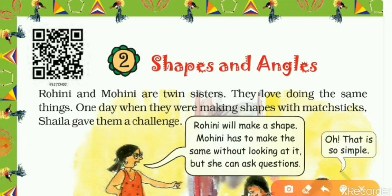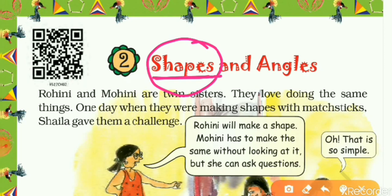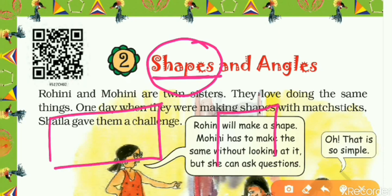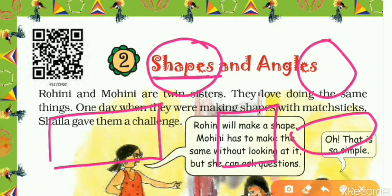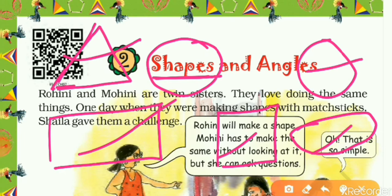Now, the name of this chapter is Shapes and Angles. Let's clarify the first word: shapes. What is a shape? In your previous classes — Class 4, 3, 2, and 1 — you have studied many special shapes like rectangle, square, circle, oval, and triangle. Yes, these are all very special shapes and you are very familiar with these figures.